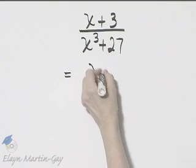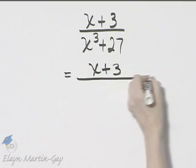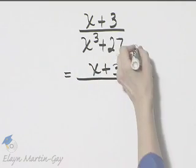Now I'll factor in the numerator. I simply rewrite x plus 3, no factoring that can be done there. In the denominator, this is the sum of two cubes.